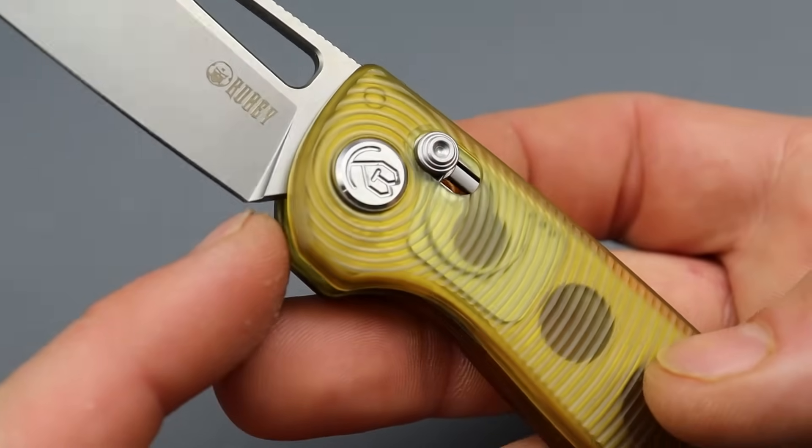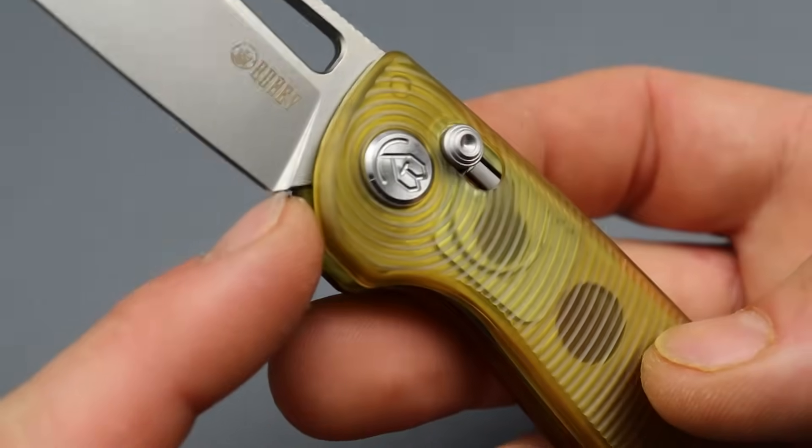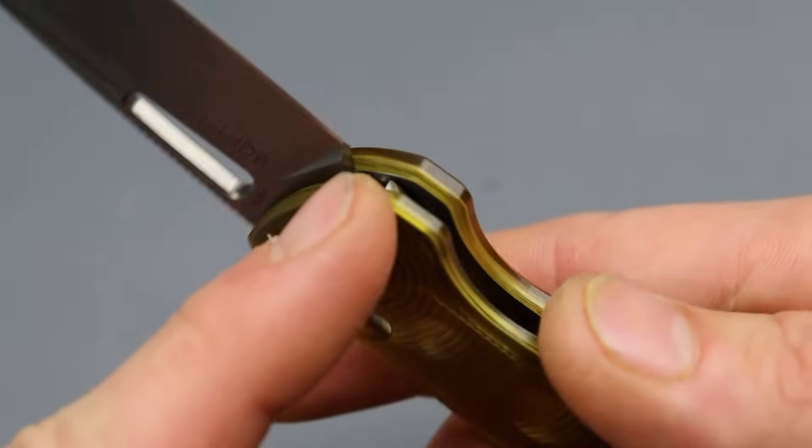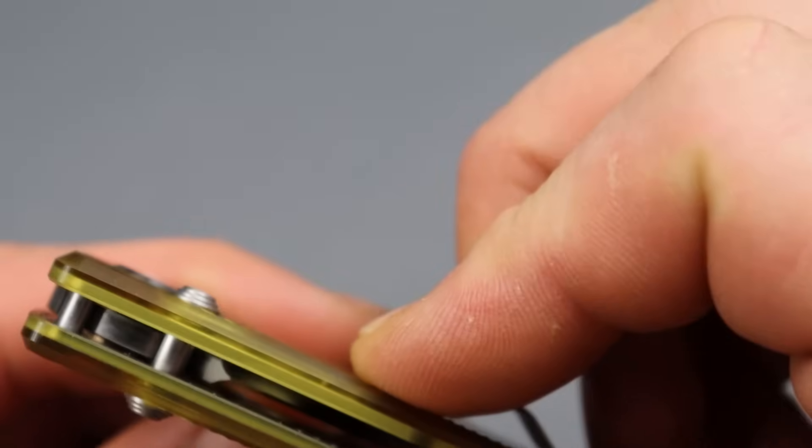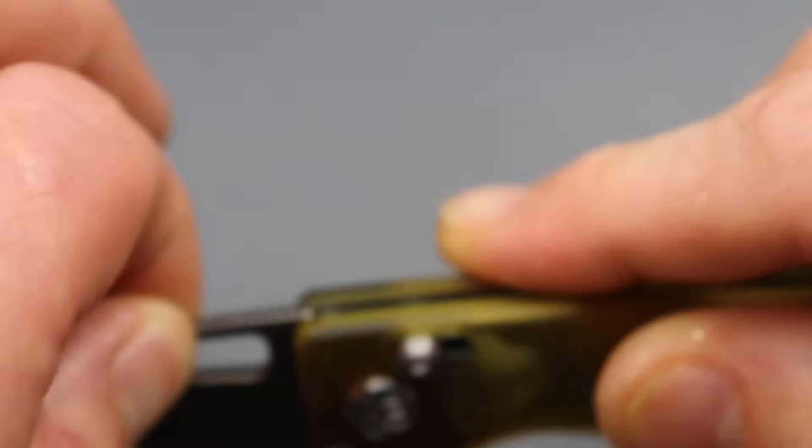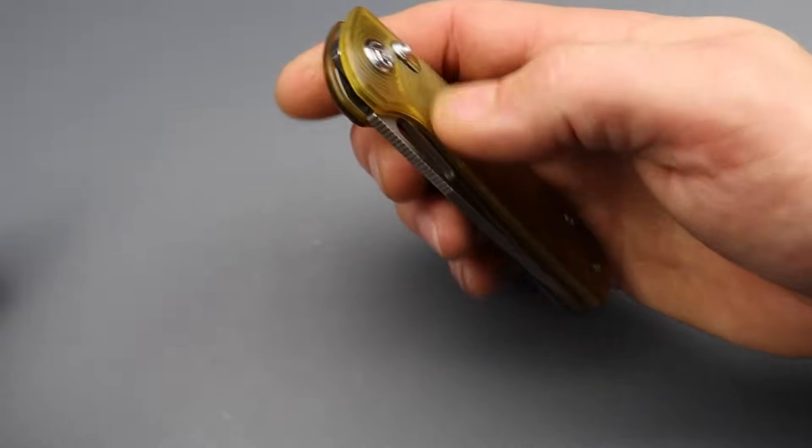The sharpened choil plunge grind could definitely be better. I don't know why they plunged the plunge grind right to the edge. That is going to create a smile. That is a no go, or not a no go. It's not a deal breaker. That's just something I don't like.